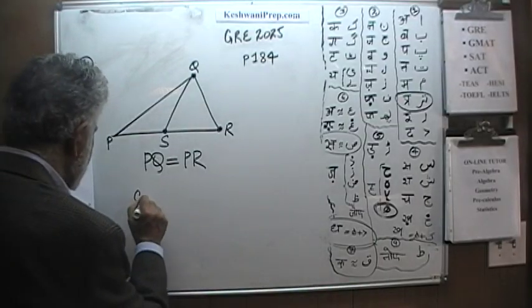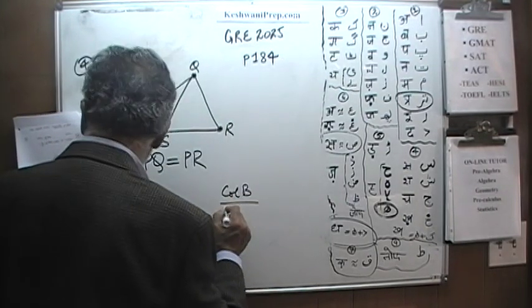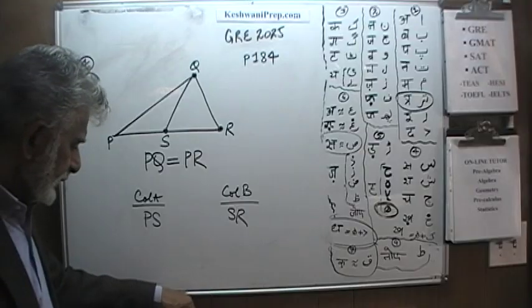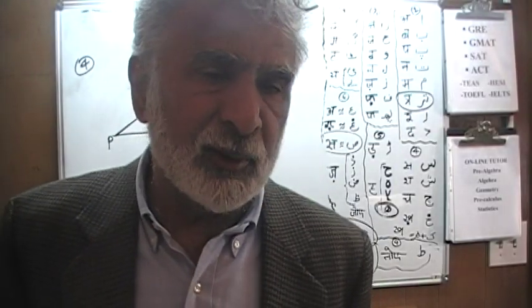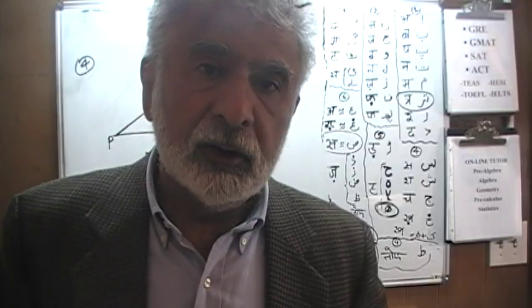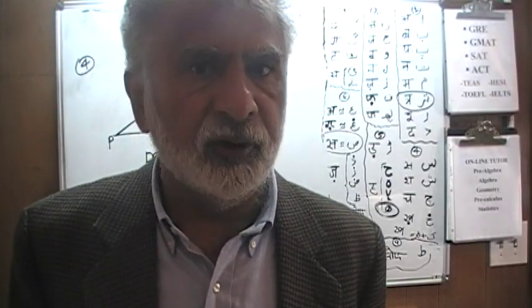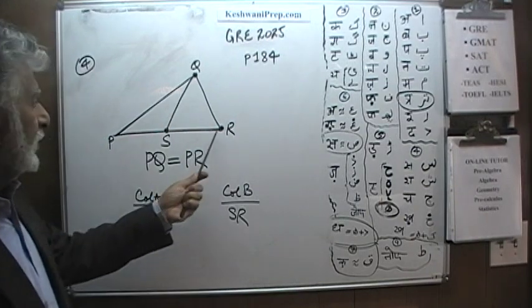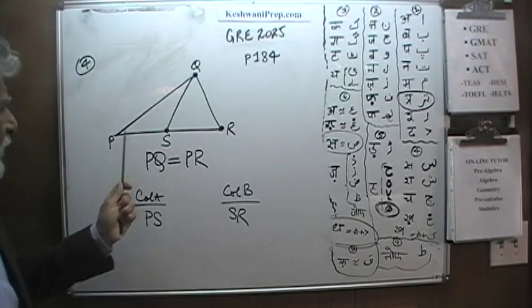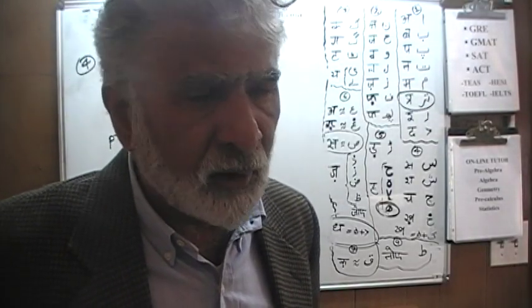Here's the question. Which column is bigger? Column A, which is the distance from P to S, or column B, which is S to R? But the fact that PQ is equal to PR is actually of no importance to us. It plays no role. It is superfluous, unneeded, unnecessary, gratuitous.